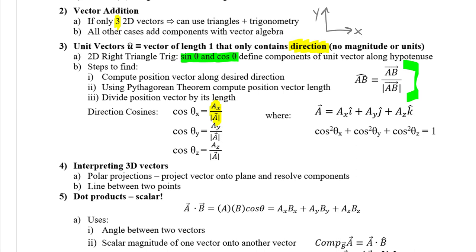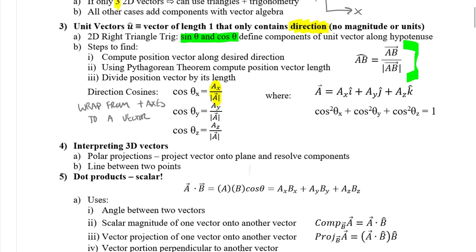If you end up with any direction cosine angle greater than 90 degrees, it means your component in that direction is going to be negative. There are some great interactive tools on the course content — GeoGebra interactives — where you can visualize these direction cosine angles. We also used polar projections when defining angles and components, which essentially project a vector into a plane.